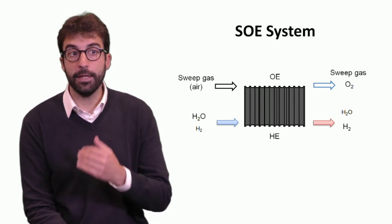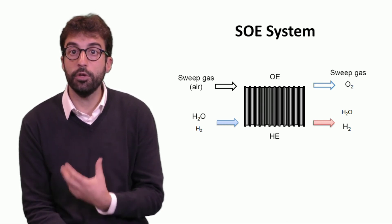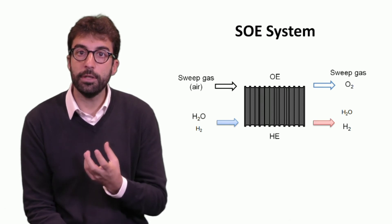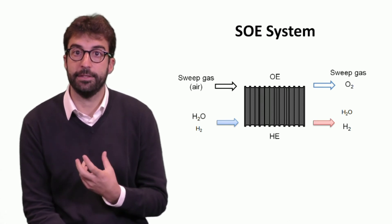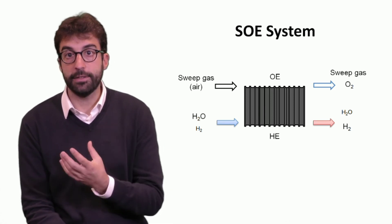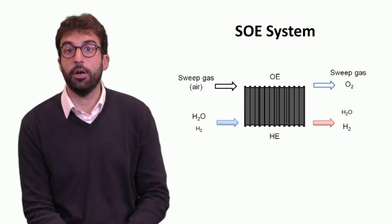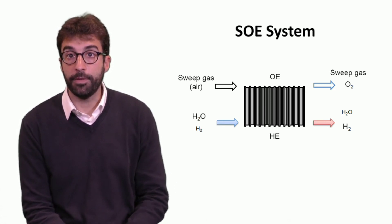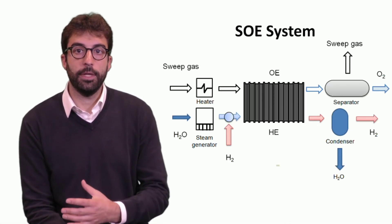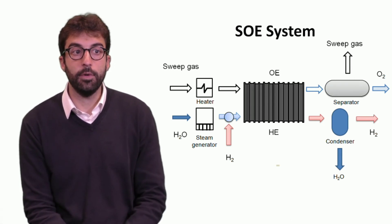On the other side, at the oxygen electrode, we can theoretically produce only oxygen, but what we usually use is a sweep gas—usually air—that collects the oxygen produced and flows it out of the oxygen electrode area.